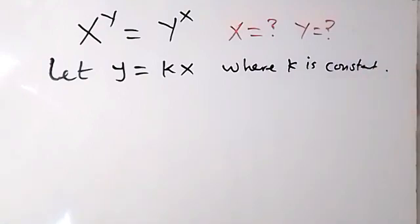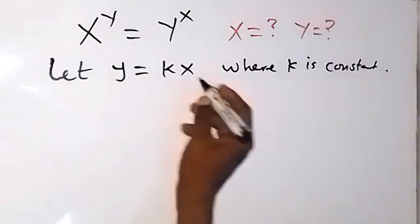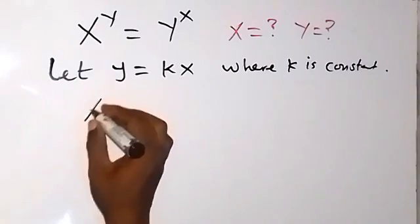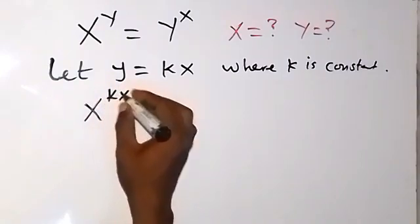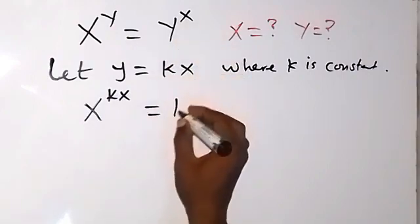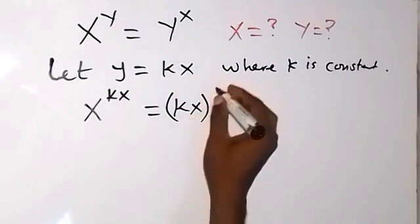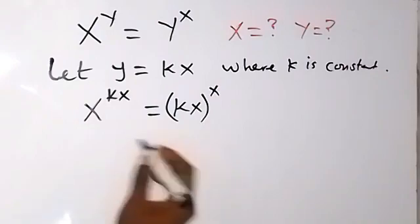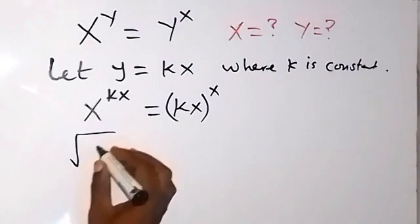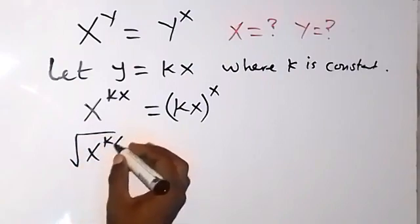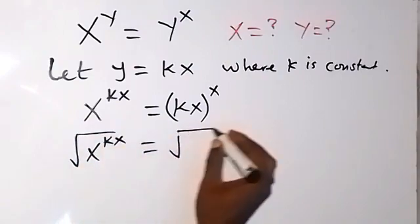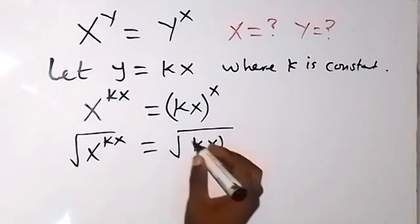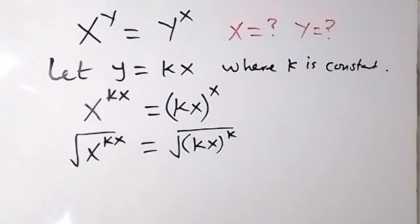From here we now rewrite the equation. Since y equals kx, we have x raised to power kx equals kx raised to power x. From there, let's take the square root on both sides — square root of x raised to power kx equals square root of kx raised to power k.